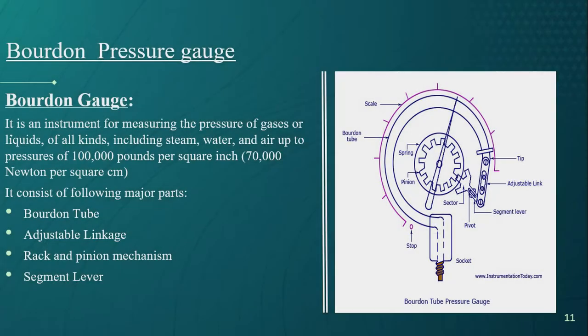Now in a few slides we'll discuss the Bourdon pressure gauge. Bourdon gauge is an instrument for measuring the pressure of gases or liquids of all kinds, including steam, water, and air up to pressures of 100,000 pounds per square inch or 70,000 newtons per square centimeter. It consists of following major parts: Bourdon tube, adjustable linkage, rack and pinion mechanism, and segment lever.